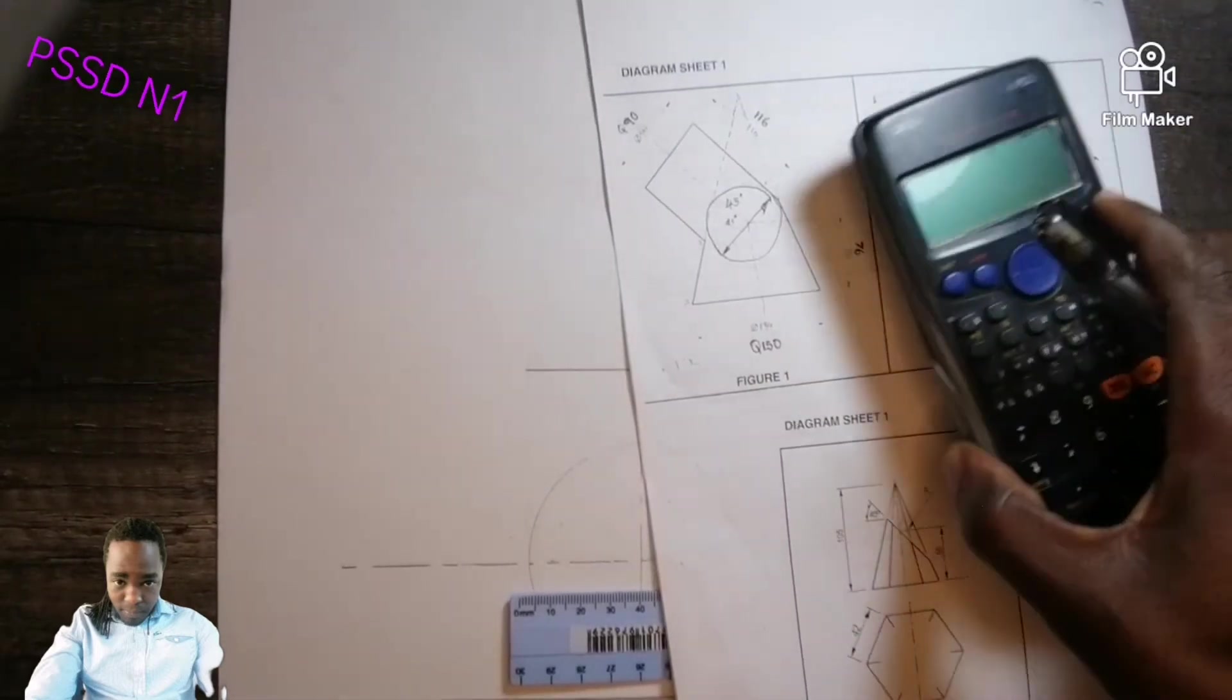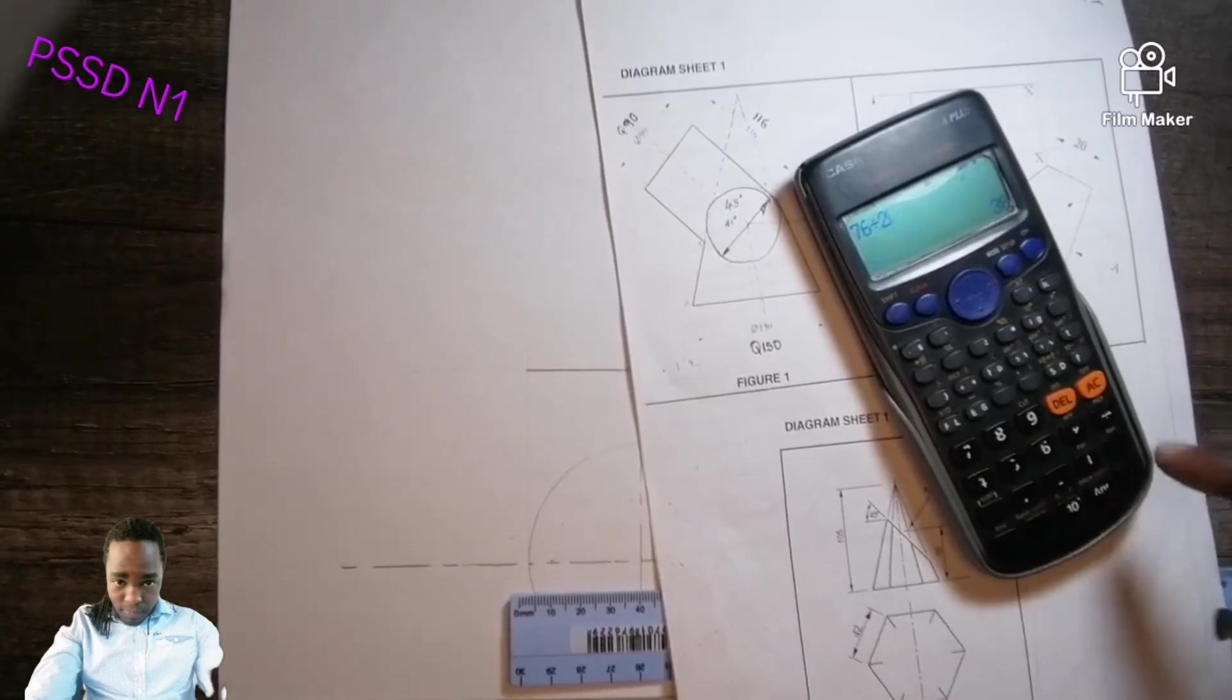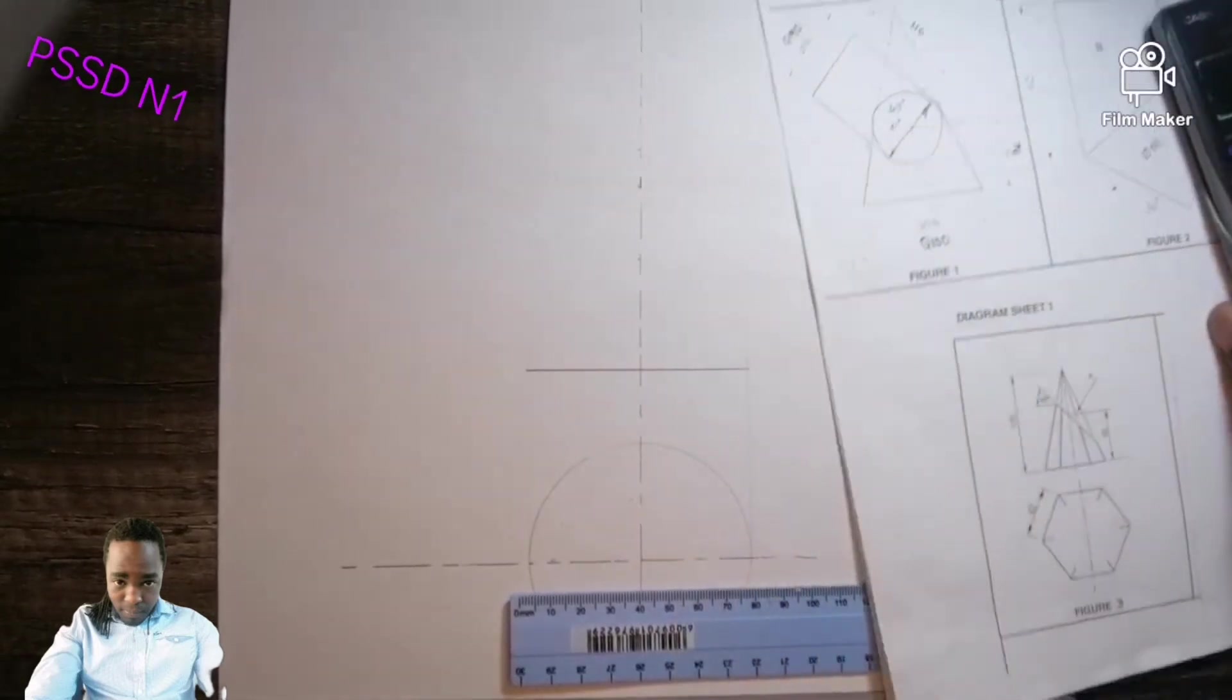You come from here going up, you measure 38 millimeter. Put it at zero. This is 30, 35, 40.